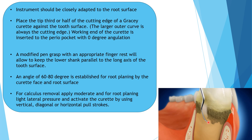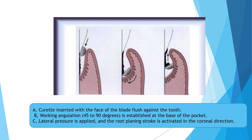The working end of the curette is inserted into the periodontal pocket with 0-degree angulation. A modified pen grasp with an appropriate finger rest keeps the lower shank parallel to the long axis of the root surface. An angulation of 60 to 80 degrees is established for root planing between the curette face and the root surface. For calculus removal, moderate lateral pressure is applied, and for root planing, light lateral pressure is used, activating the curette with vertical, diagonal, or horizontal pull strokes in a coronal direction.